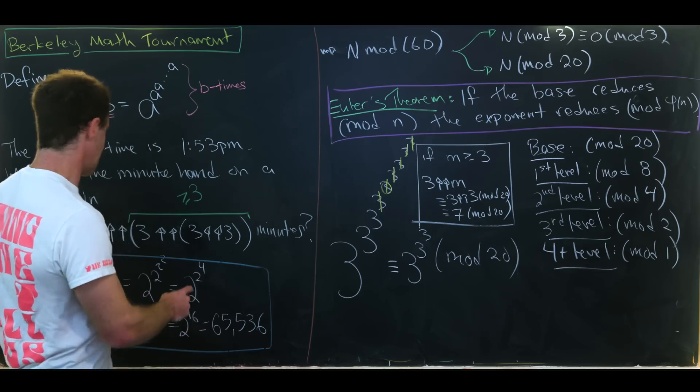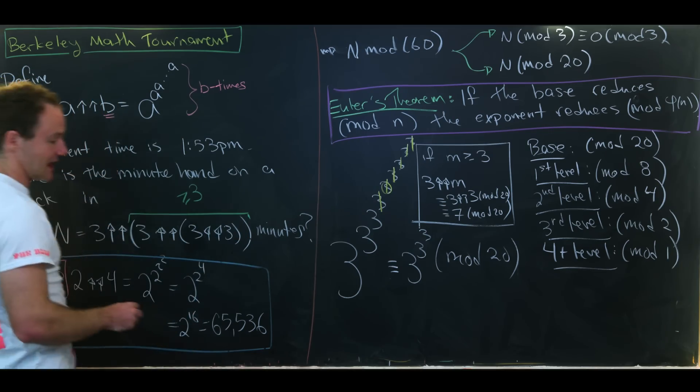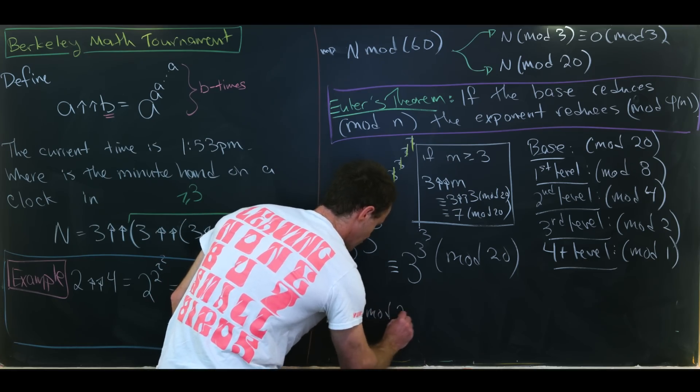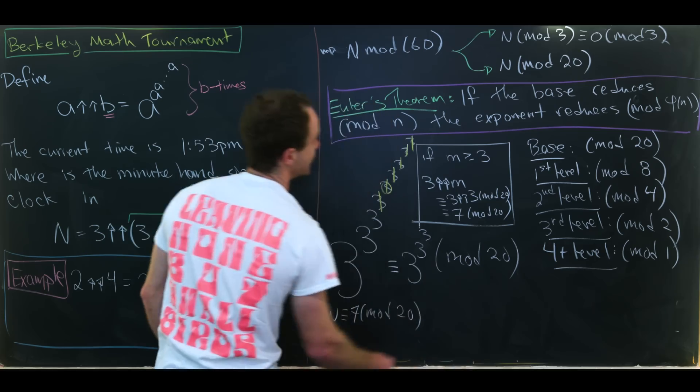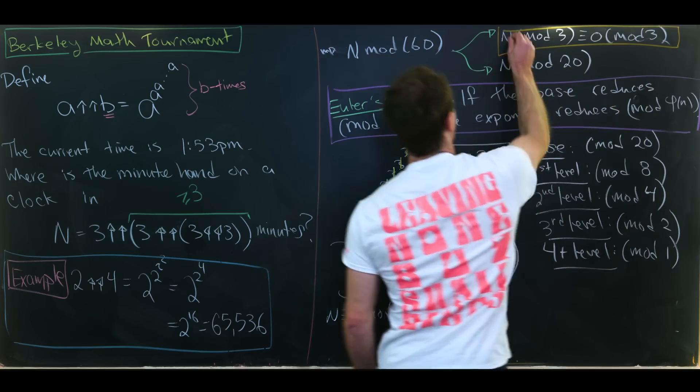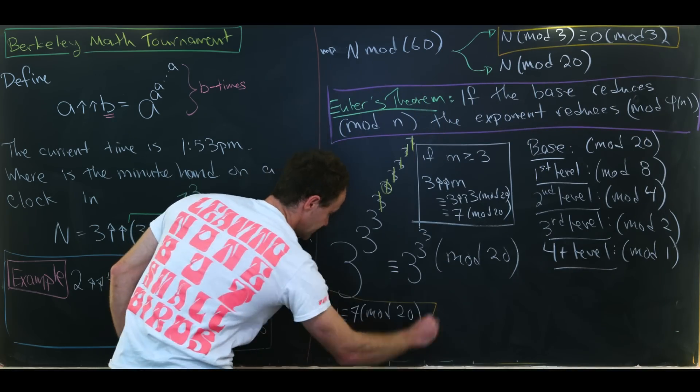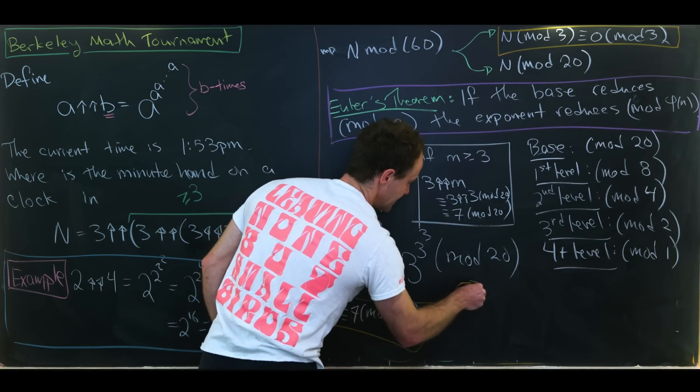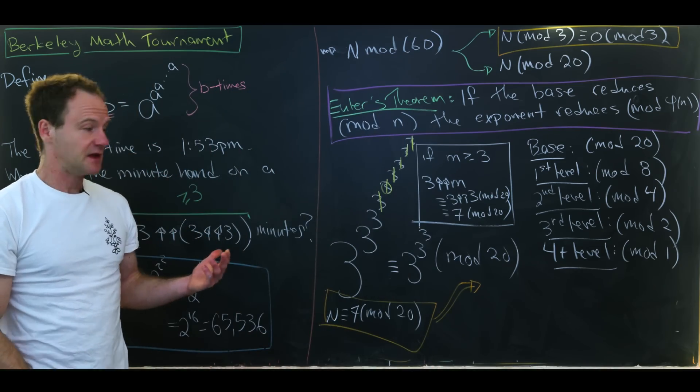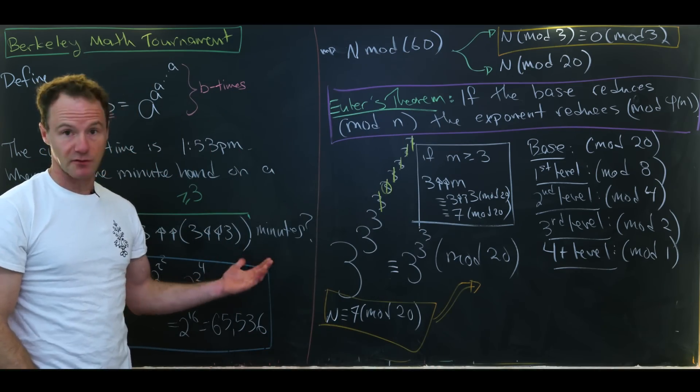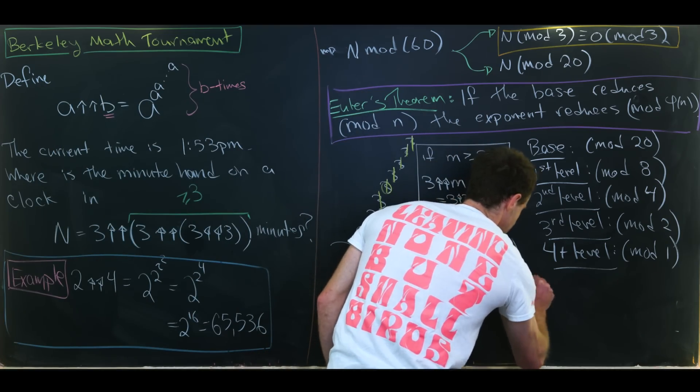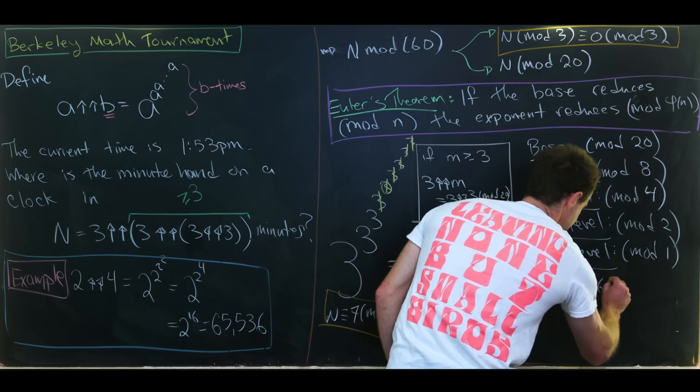But that means that our whole thing our N is congruent to 7 modulo 20. So let's see what we know. We know up here that N is congruent to 0 mod 3. N is also congruent to 7 mod 20. So we need to look for a number between 0 and 60 that's congruent to 0 mod 3 and 7 mod 20. That means that N is congruent to 27 mod 60.